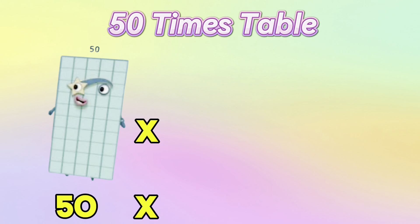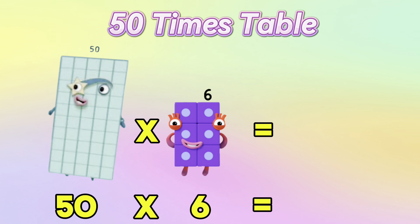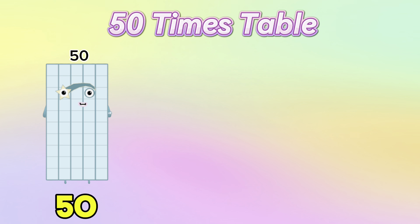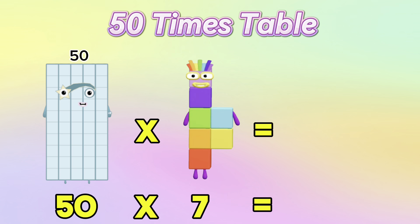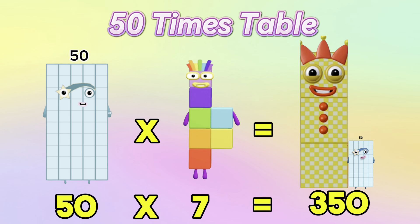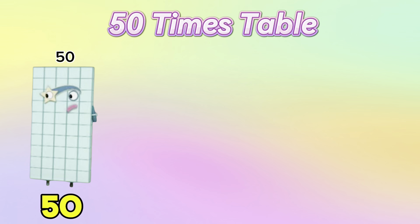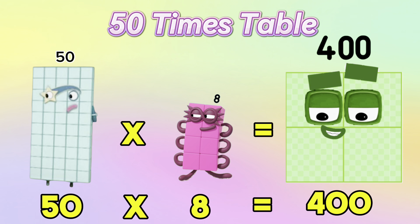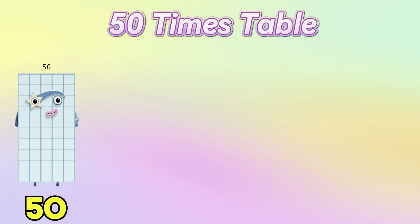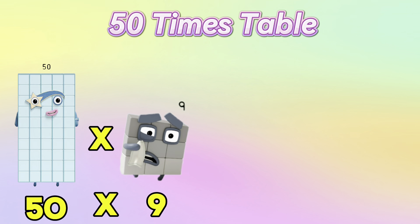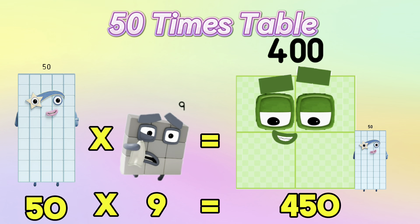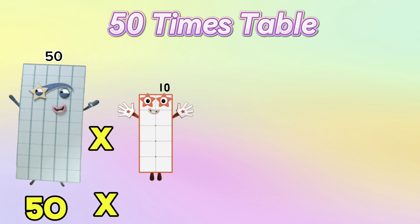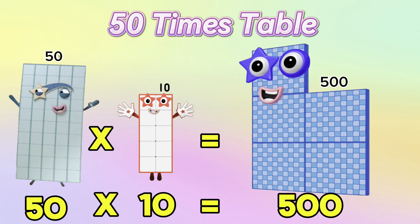50 multiplied by 6 is equal to 300. 50 multiplied by 7 is equal to 350. 50 multiplied by 8 is equal to 400. 50 multiplied by 9 is equal to 450. 50 multiplied by 10 is equal to 500.